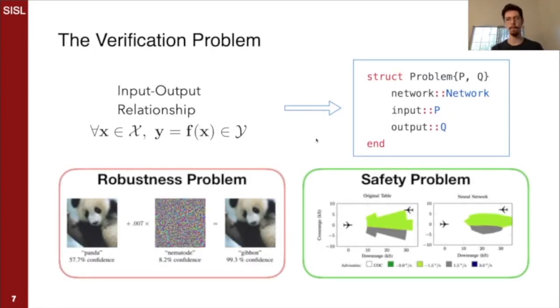Okay, now what is verification? This is the verification problem here. For all x in some input set X, y, meaning f(x), f being the neural network, must lie in some output set Y.